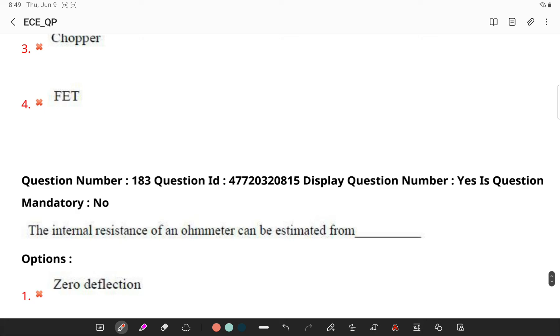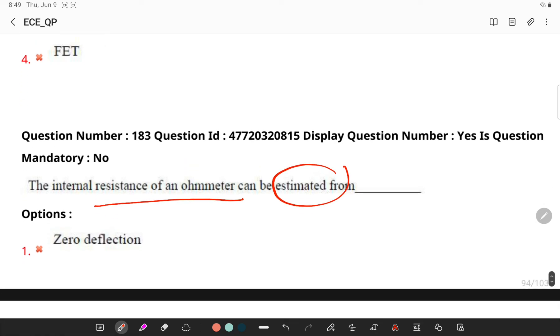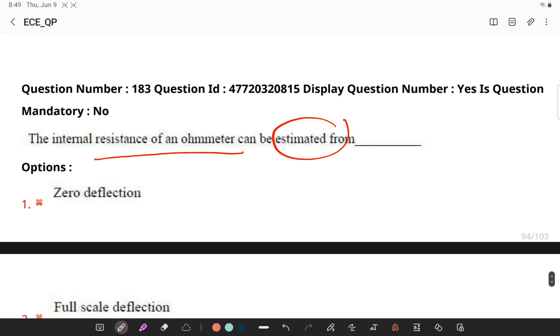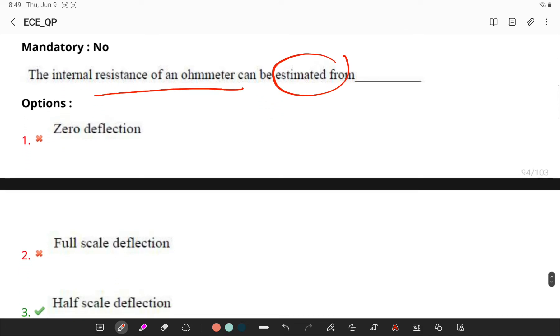What is the internal resistance of an ohmmeter which can be estimated from? So the internal resistance of a multimeter on a scale of 10 volts can be measured using half scale deflection.